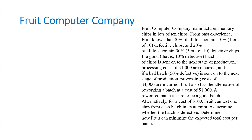The company manufactures memory chips in lots of 10 chips, so each lot has 10 chips in it. From past experience, Fruit knows that 80% of all lots contain 10% defective chips — so probability of 10% defect is 80% — and 20% of all lots contain 50% defective chips, so probability of 50% defect is 20%.